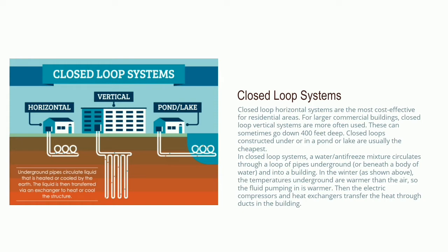During the summer, the system works in reverse. When it's hot outside, the temperature below the surface is cooler than the summer temperature above. The fluid in the loop absorbs the heat from the building and sends it underground. The ground's lower temperature cools the fluid, and it is circulated again and again.